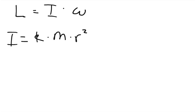The first thing we have to do is the angular momentum is equal to the moment of inertia times the angular speed. And we can say that the moment of inertia is defined as some constant k times the mass times the radius squared.